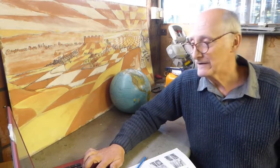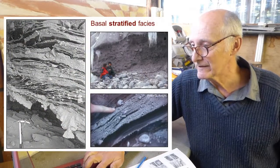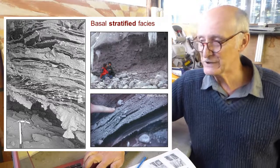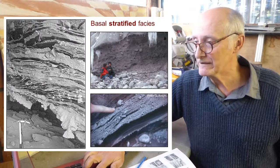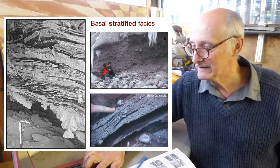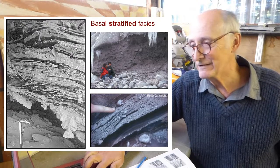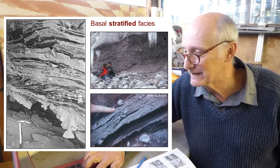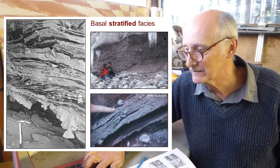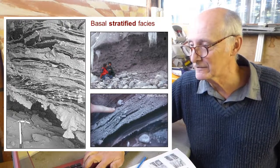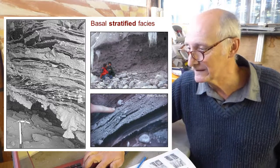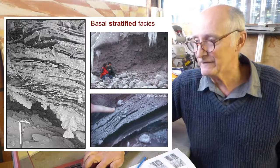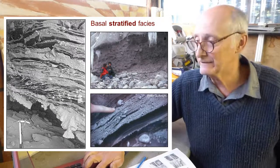In the older literature you'll find we talk a lot about a number of particular facies within the basal ice. One of these is the basal stratified facies. You can see straight away from the stripey nature of the debris in between the clean ice layers: the lighter colours are the debris-free and largely bubble-free ice, and that stripey nature is why we call it the stratified facies — because it has this stratified appearance.